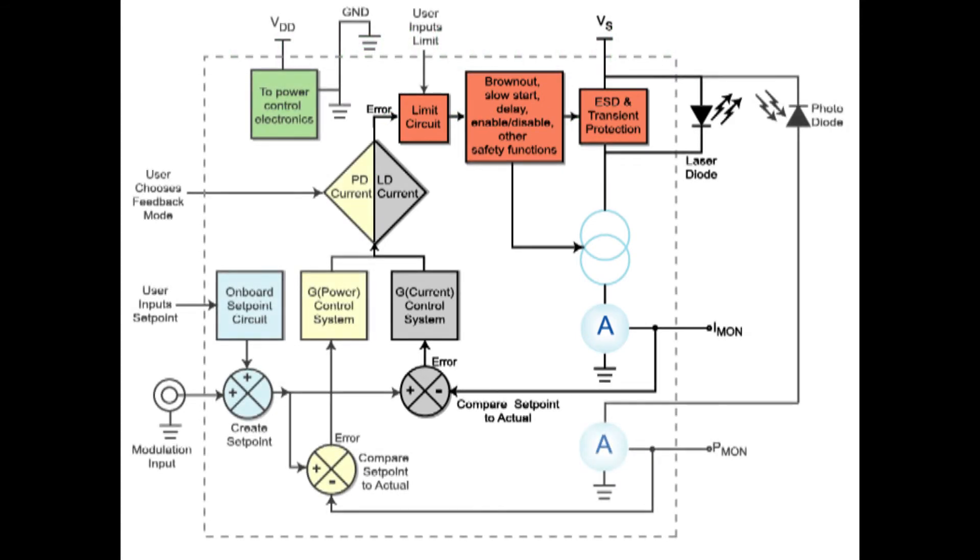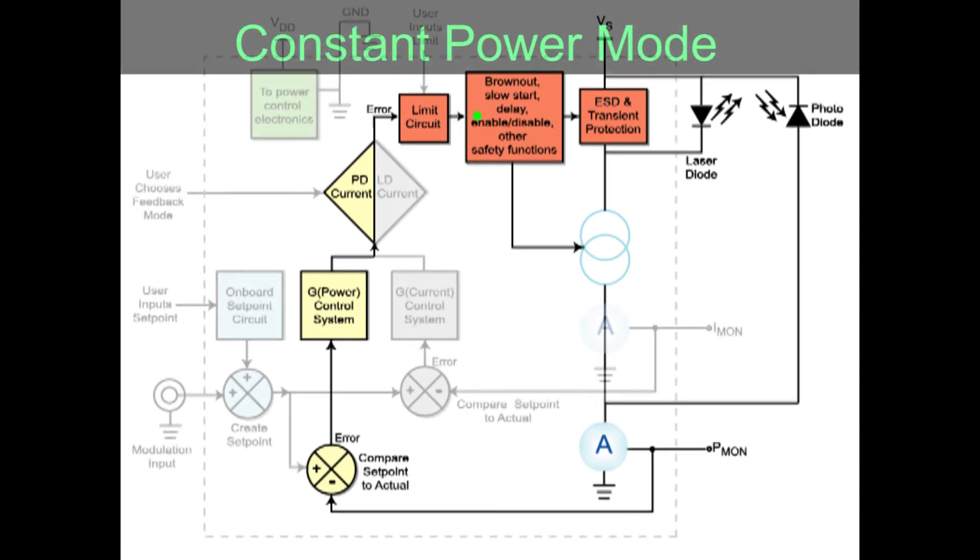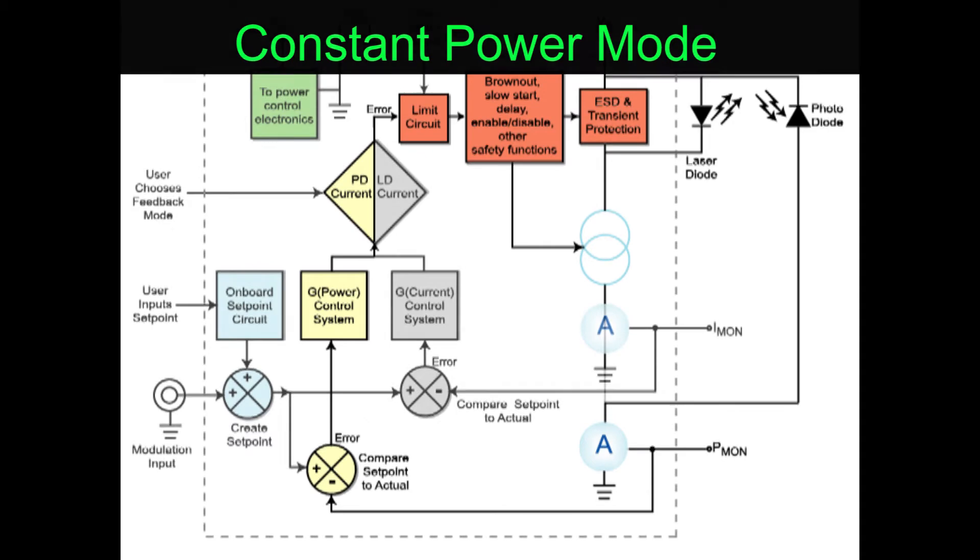If photodiode current is used as feedback, the control system will try to keep the photodiode current, and by extension laser diode optical power, constant. The output of the adjustable current source will vary to keep the optical power level constant. This is called constant power mode.